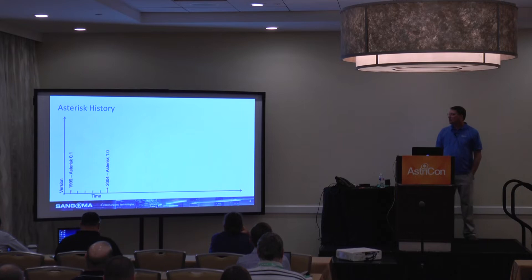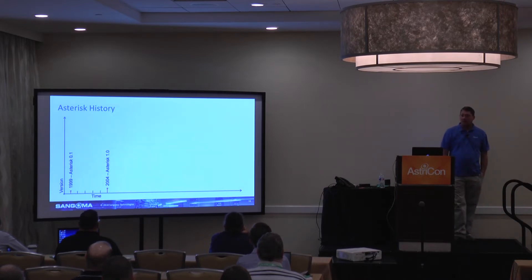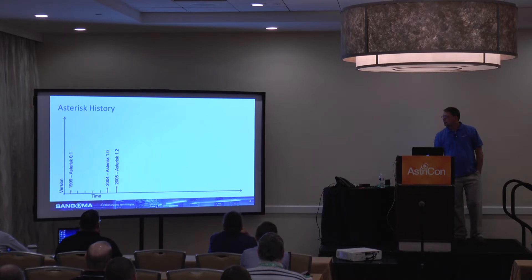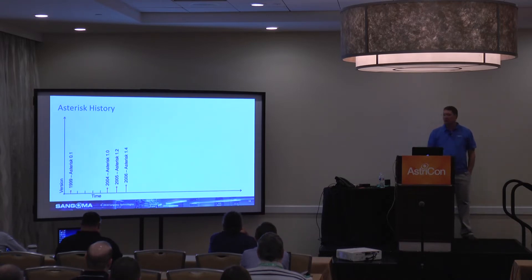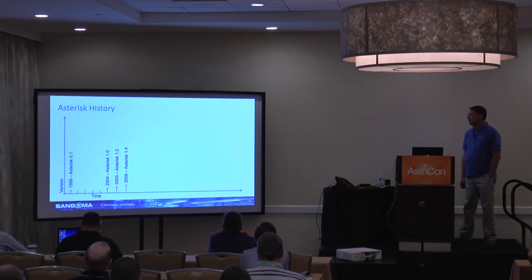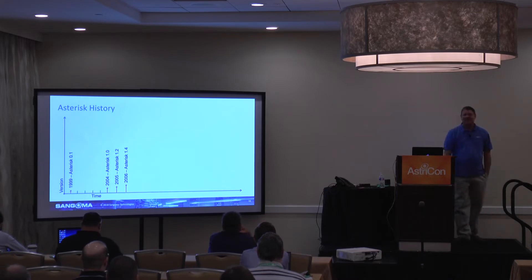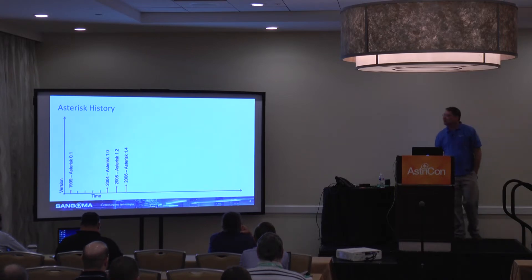In 2004 the software became stable enough to do a 1.0 release. That was quickly followed by a 1.2 release which added a lot of stability. Then 1.4 was really known as a very solid release of Asterisk. It was such a stable release that it just hung around - people would not quit using it.